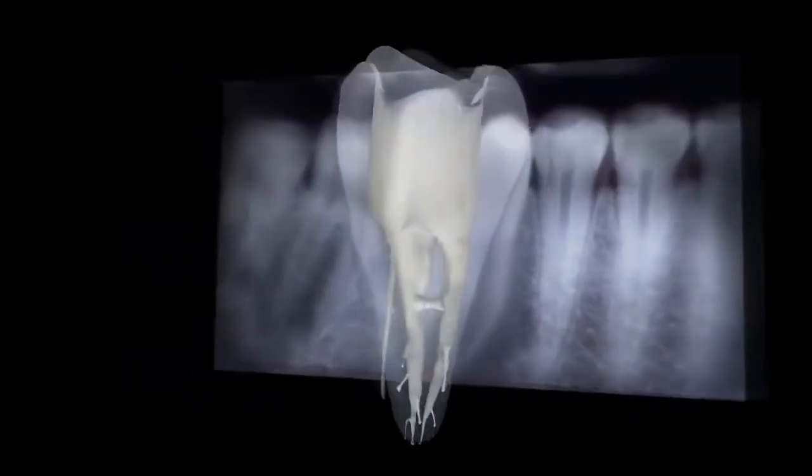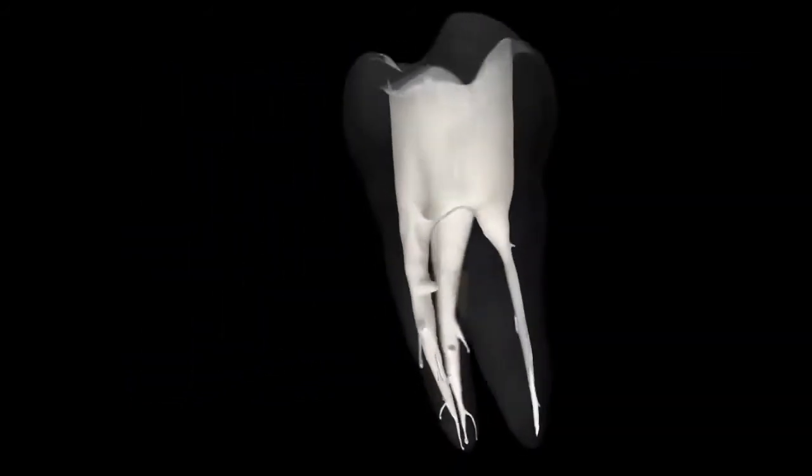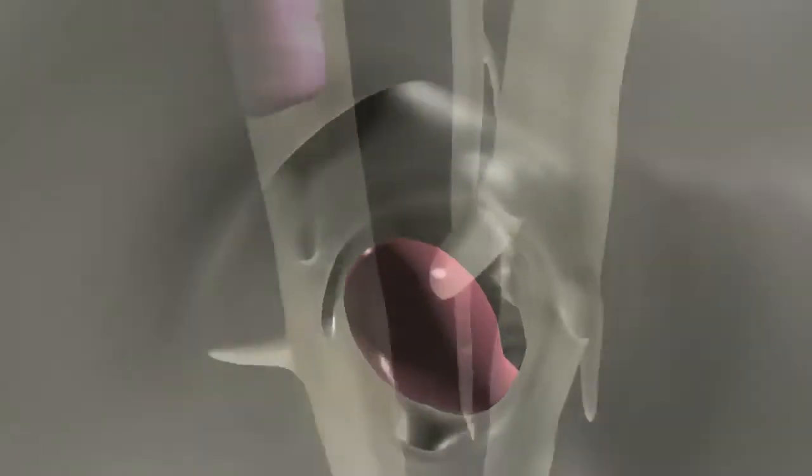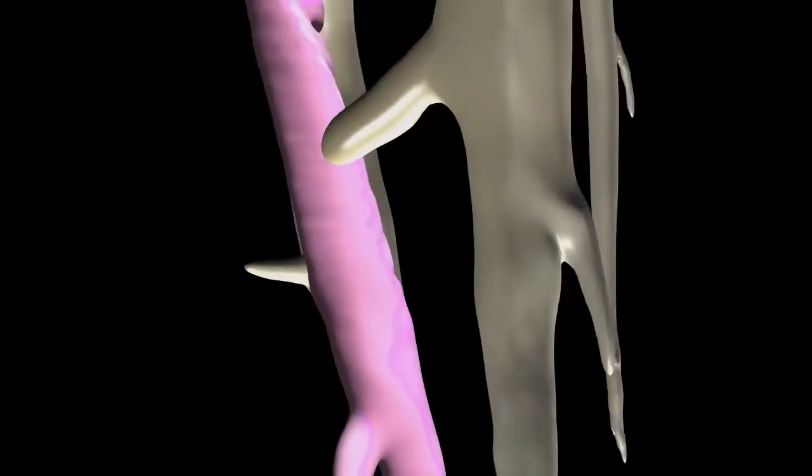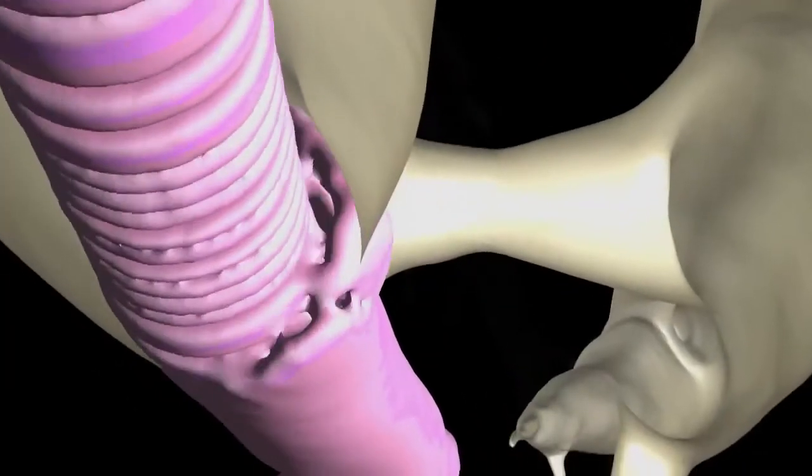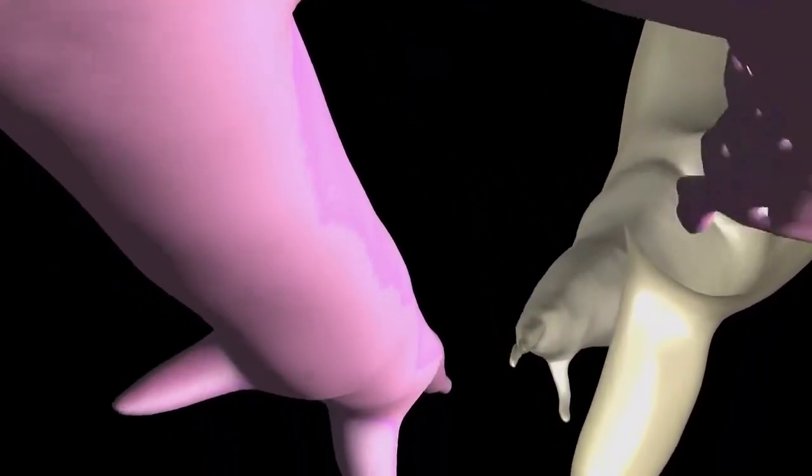Place gutta-core into the root canal system in one smooth motion without excessive force. The cross-linked gutta-percha core centrally compacts the alpha-phase gutta-percha with a hydraulic force that sends it flowing in three dimensions into laterals, isthmuses, and accessory canals.